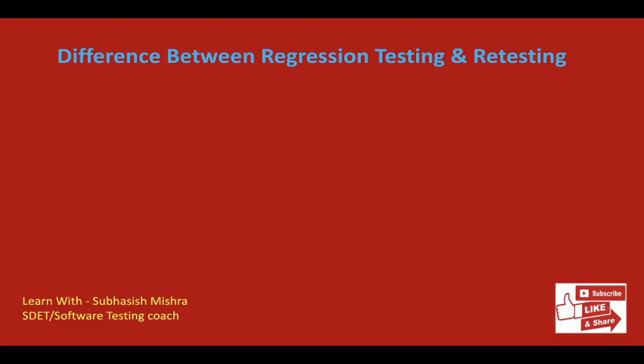Then we will see the differences. What is regression testing? Regression testing is carried out to ensure that the existing functionality is working fine and there are no side effects of any new change or enhancement done in the application. In other words, regression testing checks to see if new defects were introduced in previously existing functionality. Then what is retesting? Retesting is carried out in software testing to ensure that a particular defect has been fixed and the functionality is working as expected.